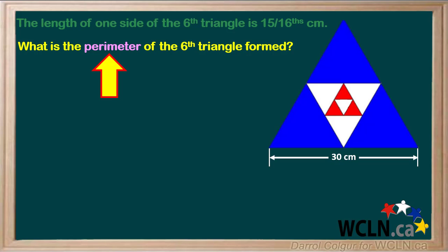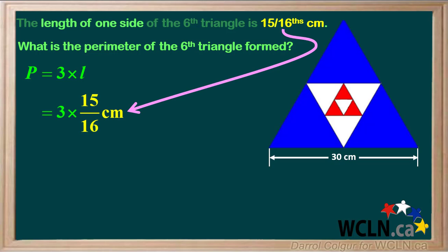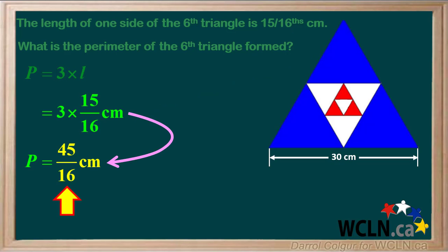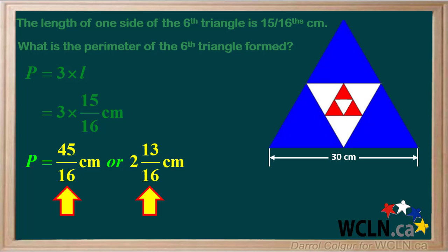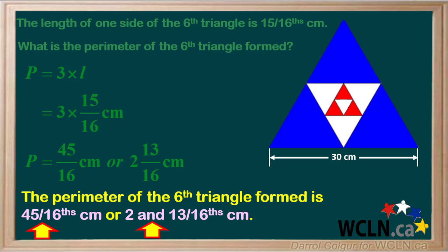The original question asked us to find the perimeter of the sixth triangle. Looking at the diagram, you can see that the perimeter of an equilateral triangle is three times L, the length of one side. The length of one side is 15 sixteenths of a centimeter. Three times 15 sixteenths equals 45 sixteenths of a centimeter, or 2 and 13 sixteenths of a centimeter. So the perimeter of the sixth triangle formed is 45 sixteenths of a centimeter, or 2 and 13 sixteenths of a centimeter.